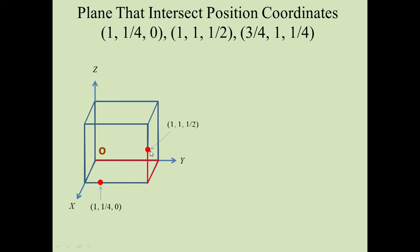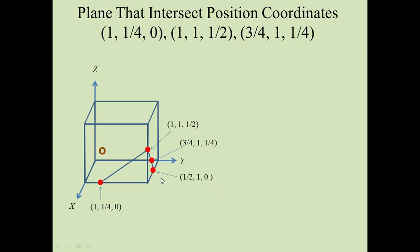For the third position coordinate, we move 3/4 along the x-axis, 1 along the y-axis, and 1/4 along the z-axis — this is position coordinate (3/4, 1, 1/4). Now join the first point to the second and the second to the third, and extend the line to this axis. It will intersect this axis at a point whose position coordinate is (1/2, 1, 0), which can be found by simple mathematics. Join this point to the first one and you get the required plane that intersects the three position coordinates.